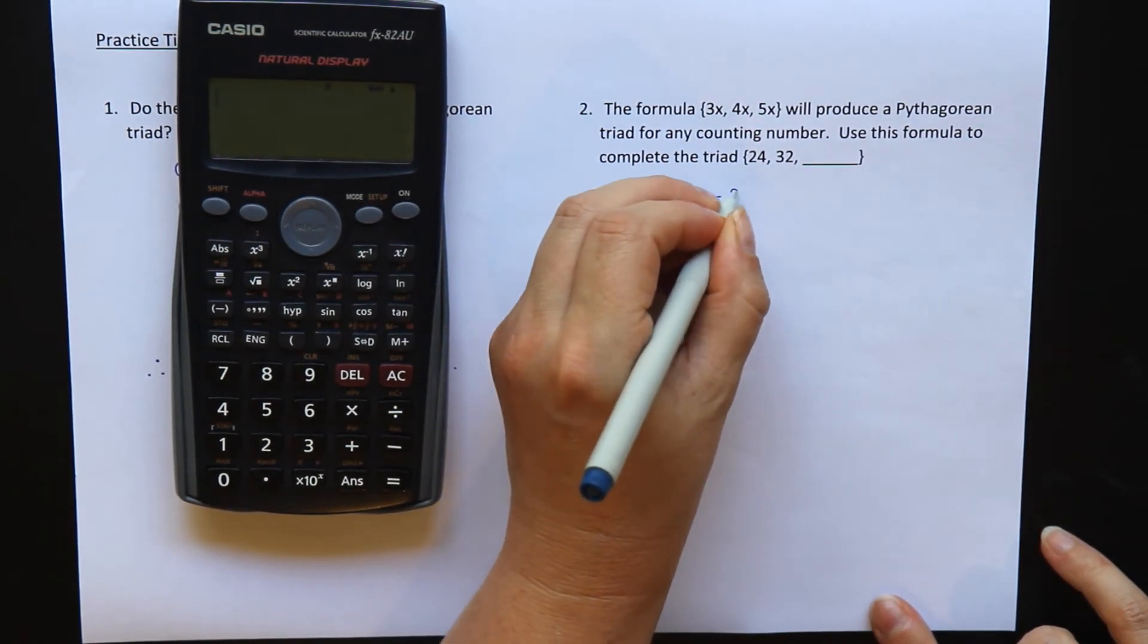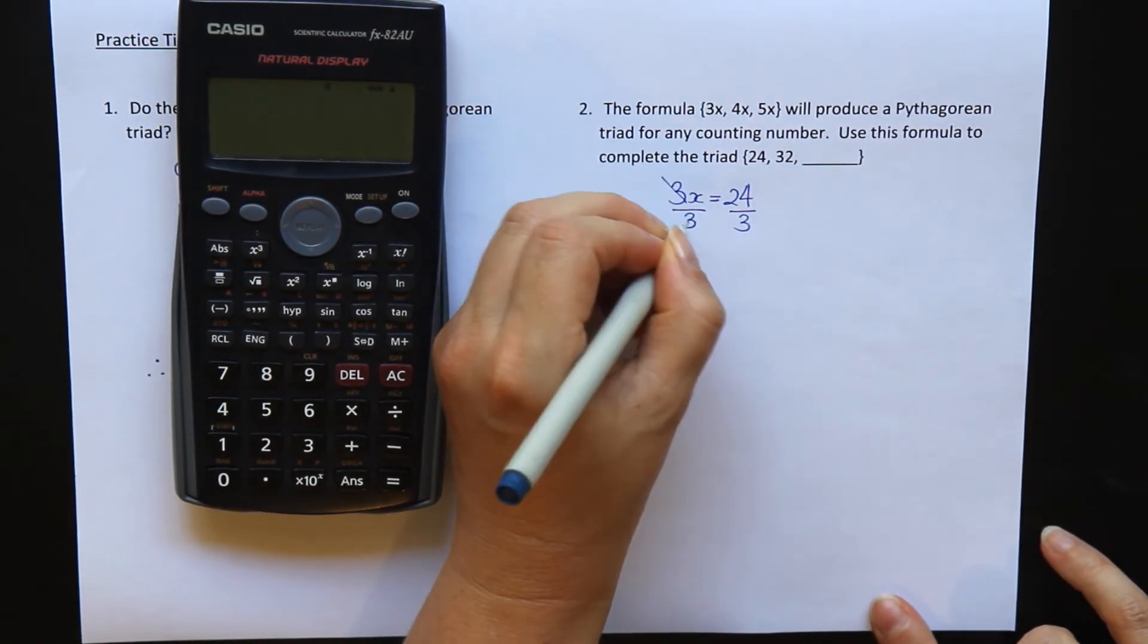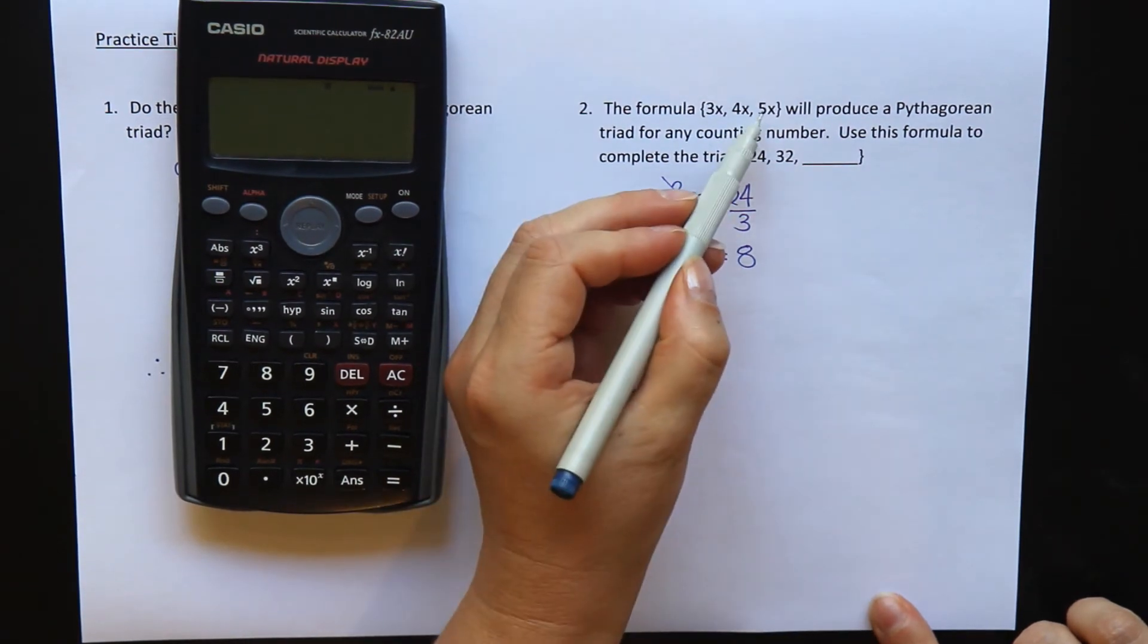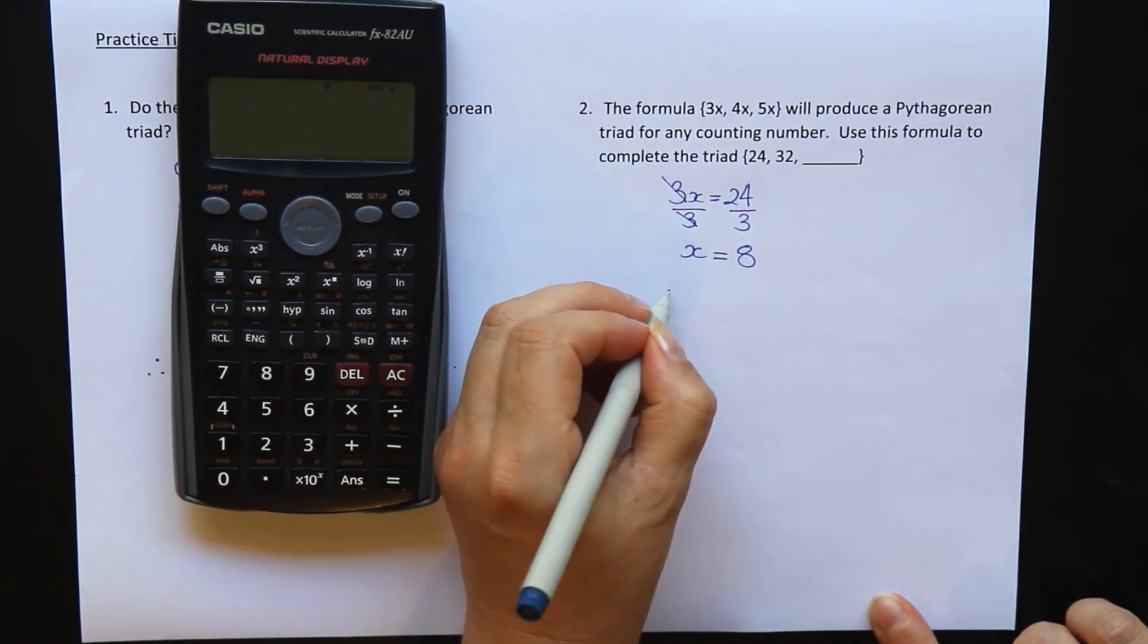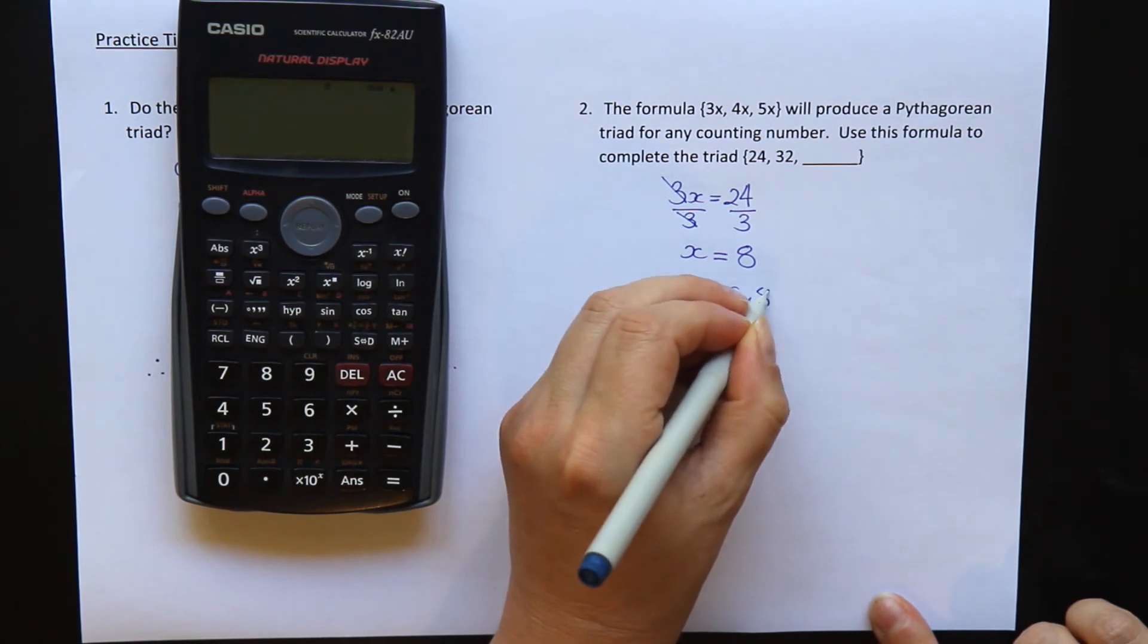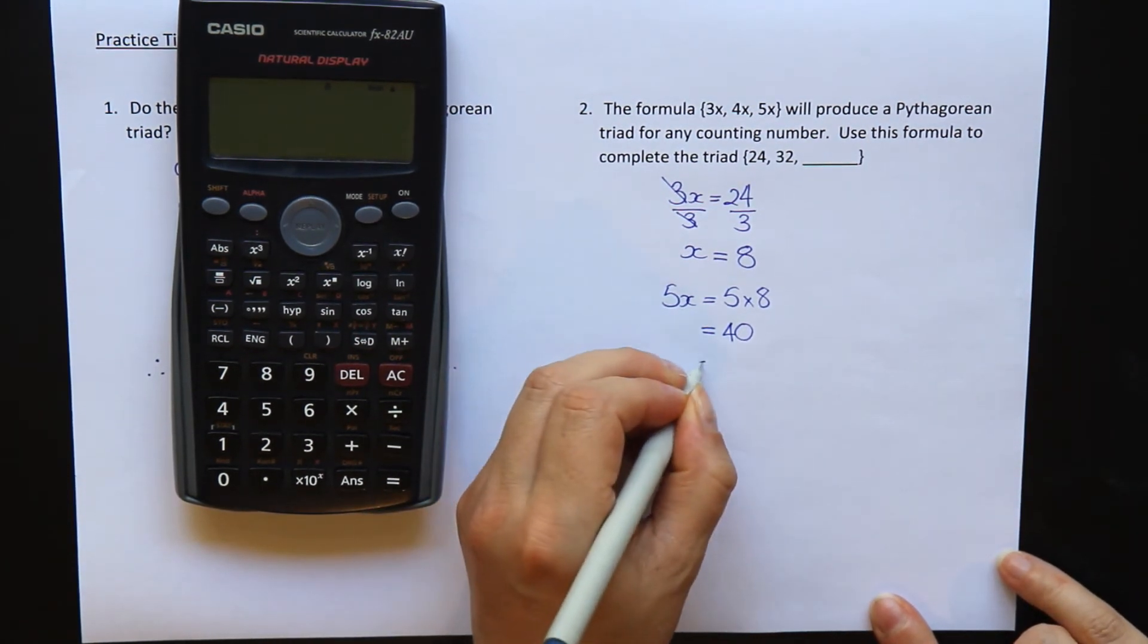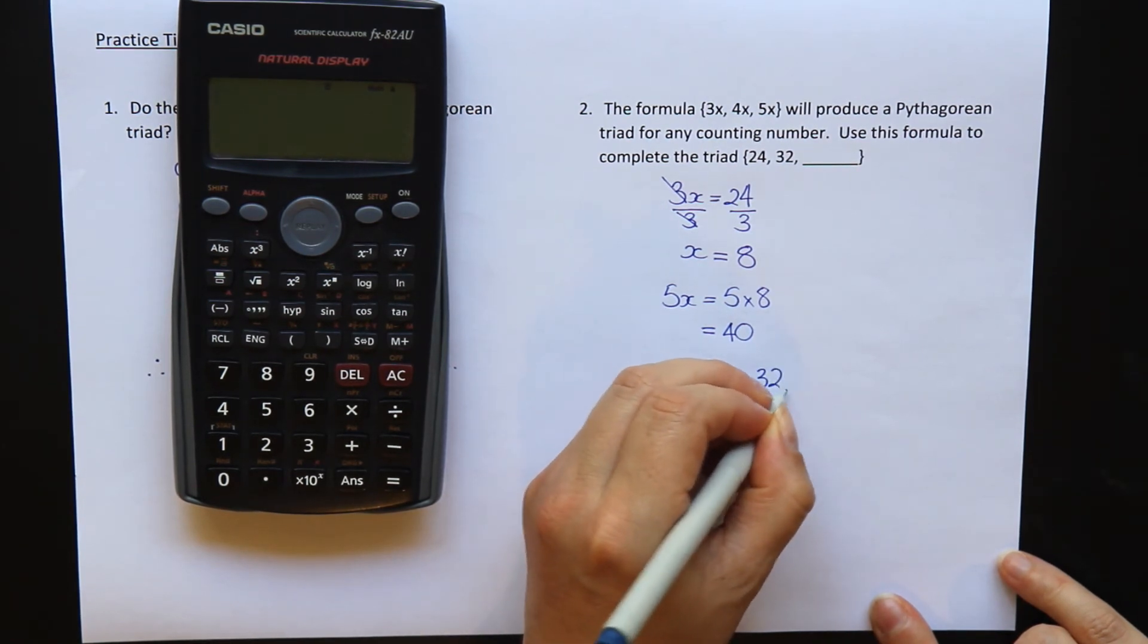3x is equal to 24. So I want to divide by 3 to get the x by itself. 24 divided by 3 is 8. So I just need to put the 8 in here with my 5 to find my third number. So 5x is going to be 5 times 8, which is 40. So therefore, my triad is 24, 32, 40.